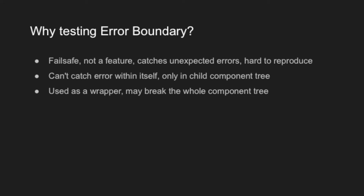The second point is that, as I said before, one of the error types that error boundary can't catch are errors within itself. So it is very important that we ensure error boundary itself is not buggy and is working as intended. And that leads us to the third point: because error boundary is mostly used as a wrapper to wrap child components, if there is an error thrown within itself, it may break the whole component tree, which is definitely something we don't want.